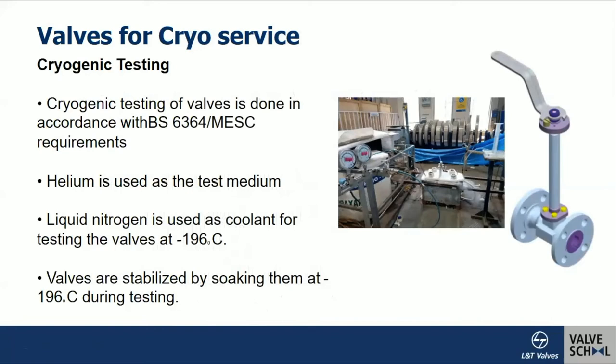Valves for cryogenic service operate at sub-zero temperatures for applications such as liquefied natural gas, liquid oxygen, liquid ammonia, ethane, and ethylene. The relevant standards are BS 6364 and the latest ISO standards for cryogenic valve design and testing. Valves are taken down to minus 196°C using liquid nitrogen as coolant, and helium is used as the test medium for leakage testing.